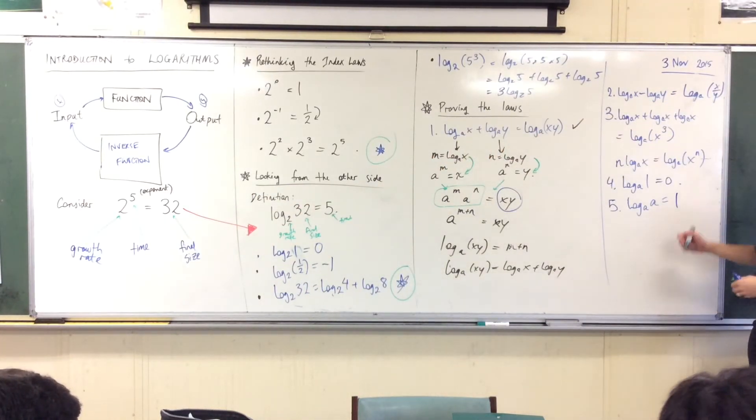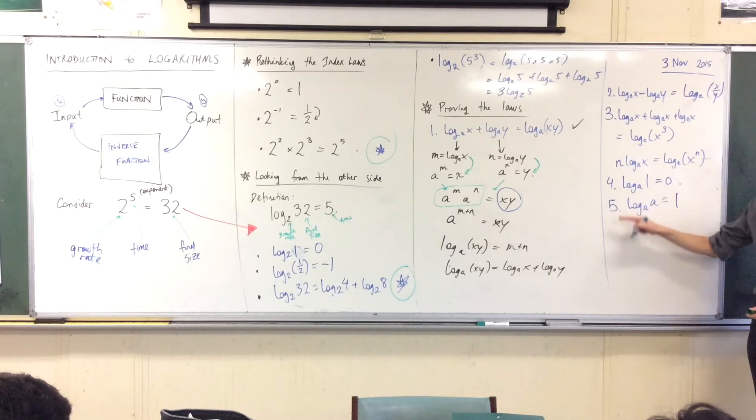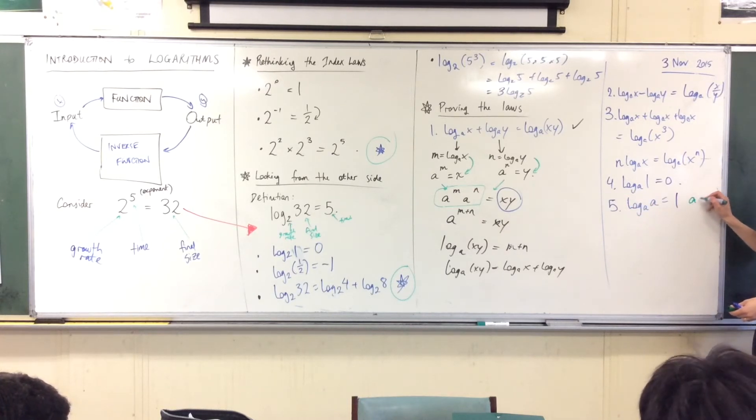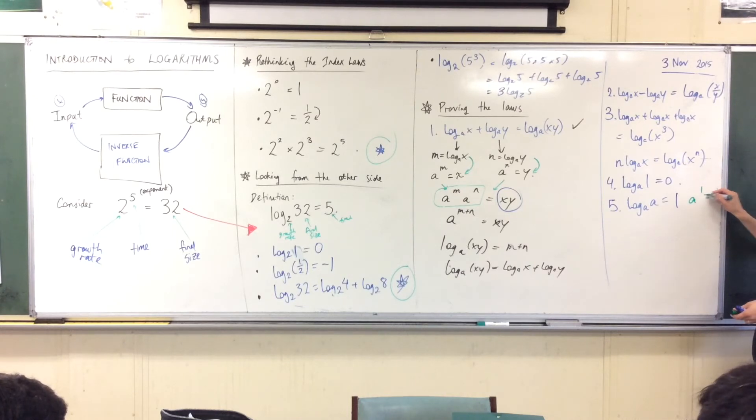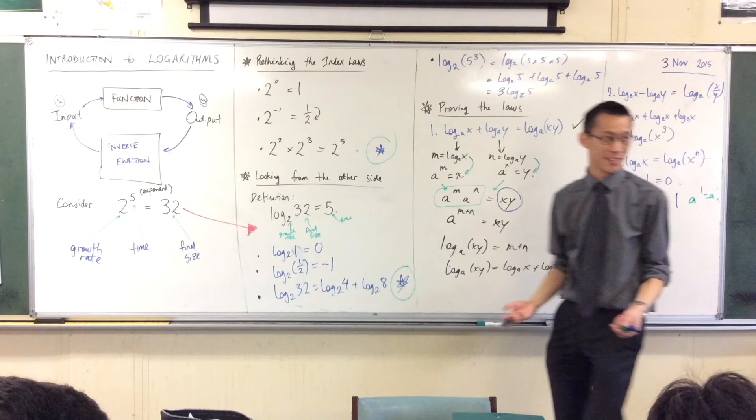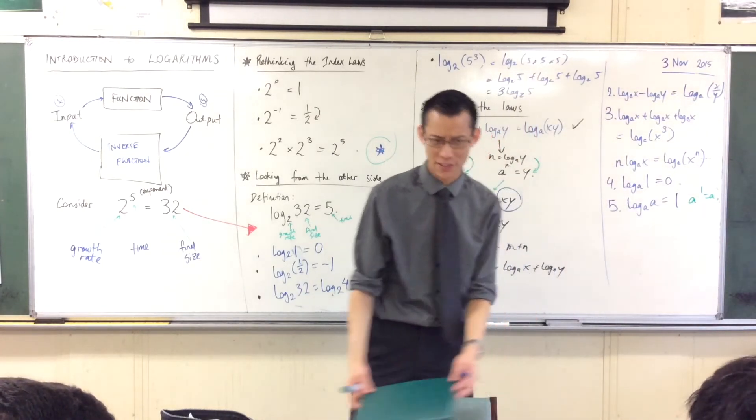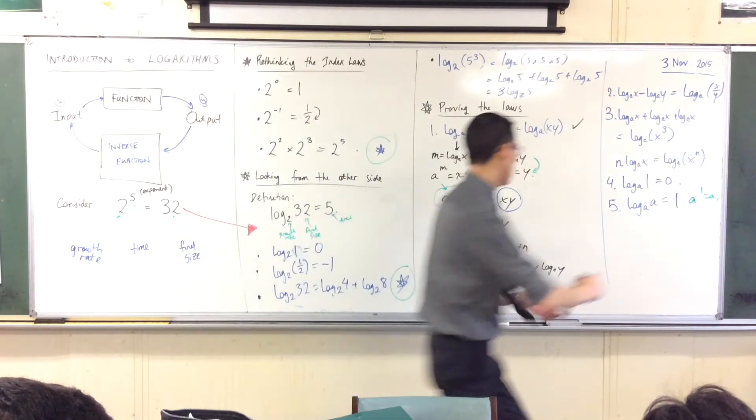Another way of looking at it is look at it from the other side, right? Remember every exponential and every log form are just reverses of each other, just turning the coin around. So if I rewrite this, it's a to the power of 1 equals a. Well of course it is, right? That's not even a log law, it's not even an index law, it's just kind of obvious, okay. All right, one more.